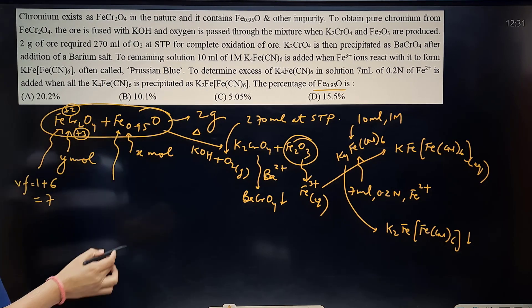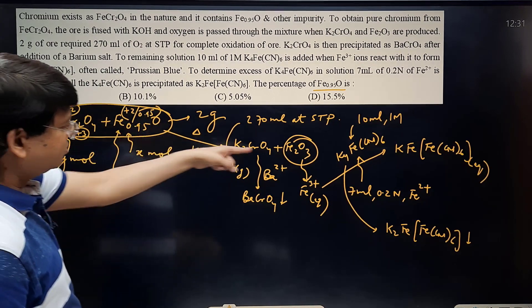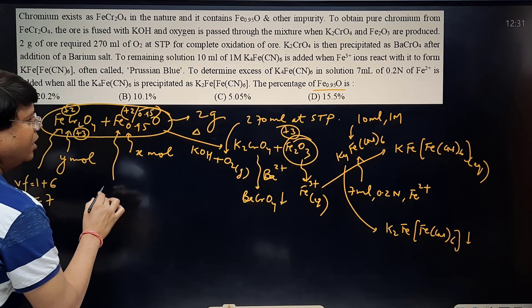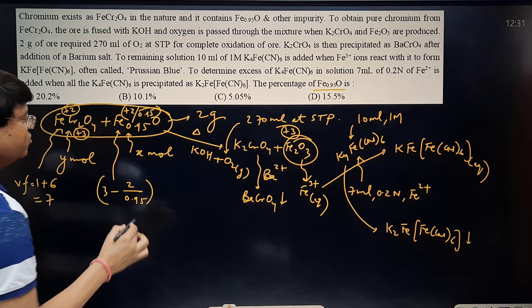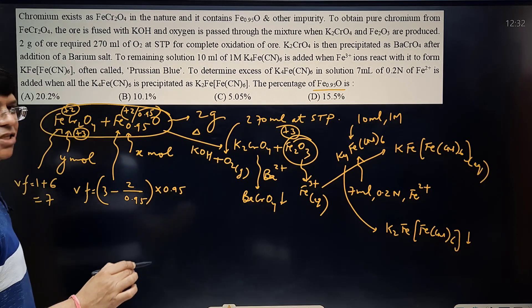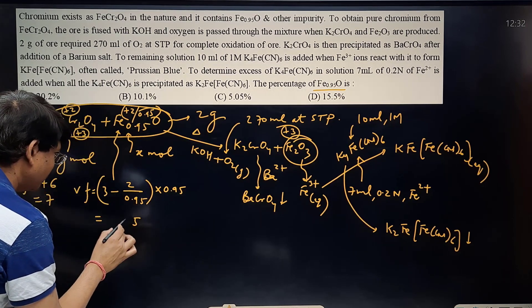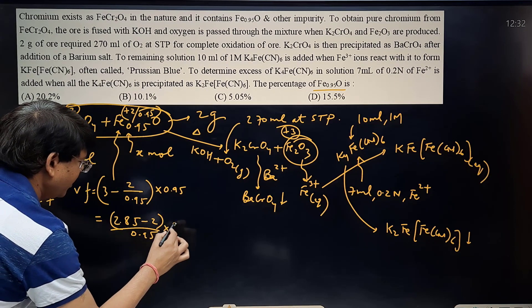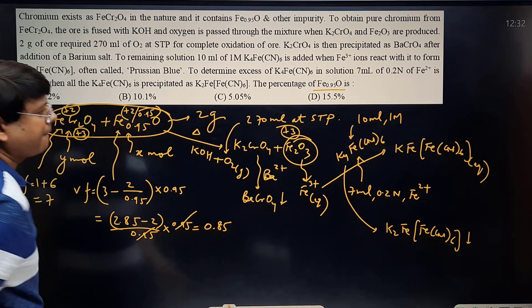Now this one, valency factor. Iron is present in +2/0.95 and it has gone to the +3 oxidation state. So what is the valency factor of this non-stoichiometric compound? This would be (3 - 2/0.95) per iron change in oxidation number, and how many iron is there? 0.95. So this is the valency factor for Fe0.95O. You solve it: 3 minus 2/0.95 into 0.95. Of course this value comes out to be 0.85.